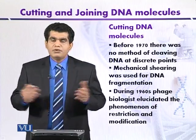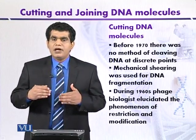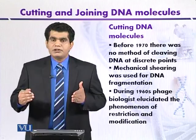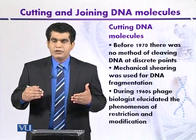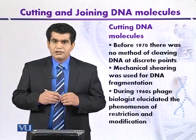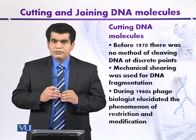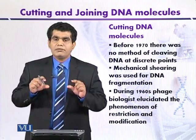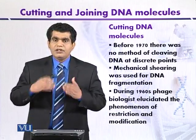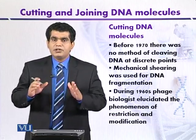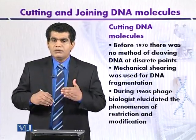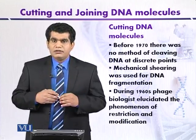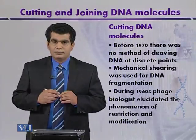A few years later, scientists discovered another valuable restriction enzyme from another organism called Haemophilus influenzae, which is also a bacterium. This enzyme was isolated and proved to be more valuable because it could cut the DNA fragment at a particular recognition site, producing discrete fragments. As a result, desirable fragments were obtained and could then be used in the field of gene manipulation.